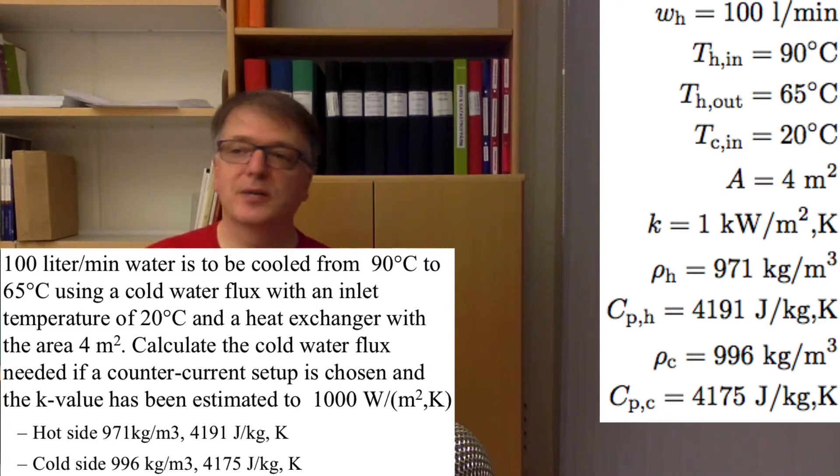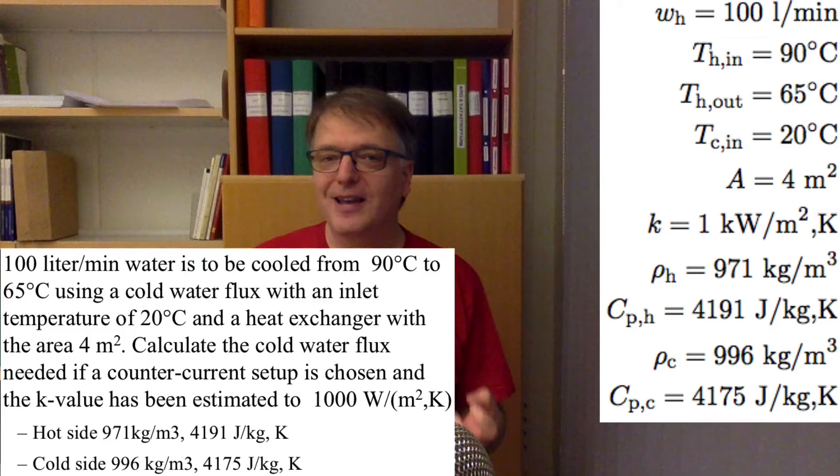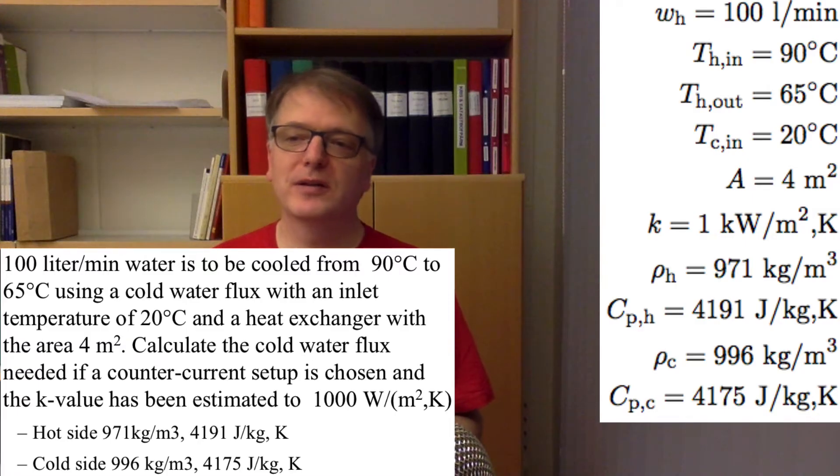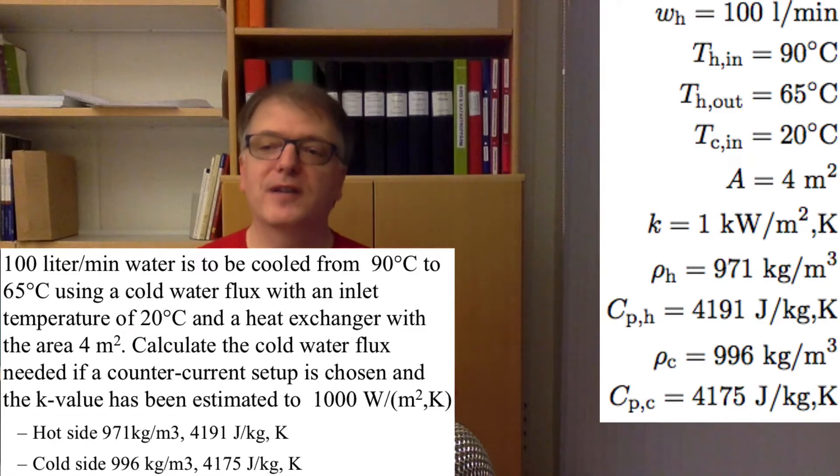On the hot side we have 971 kg/m³ and 4191 J/(kg·K) as the heat capacity. On the cold side, well we actually don't know the temperature so you can't look that up, but let's assume that it's 996 kg/m³ density and 4175 as the heat capacity.